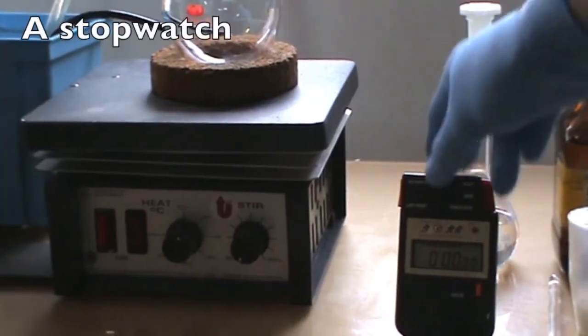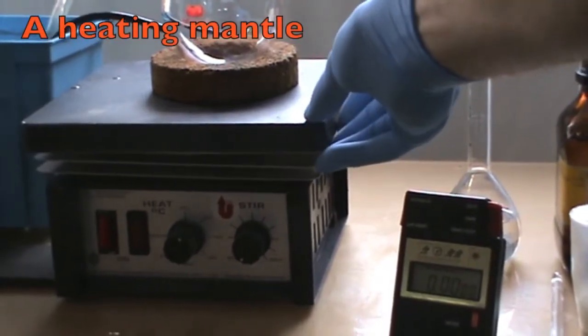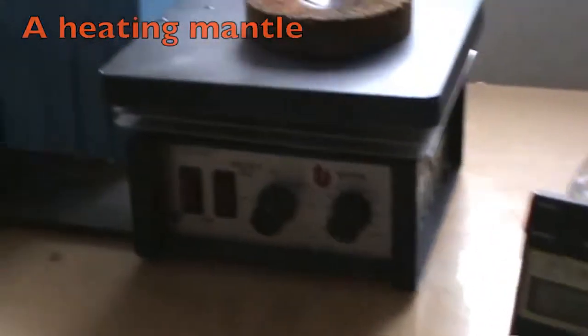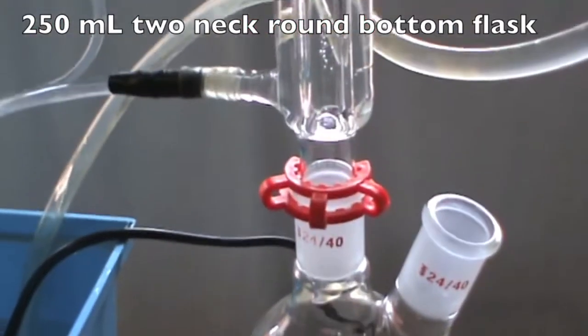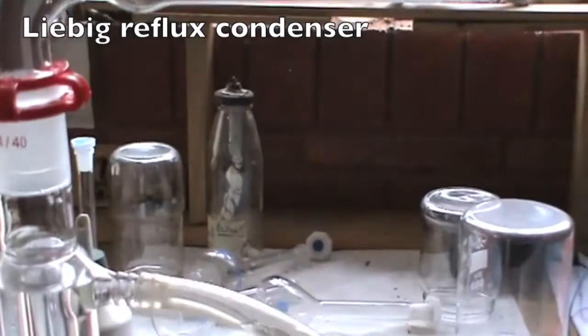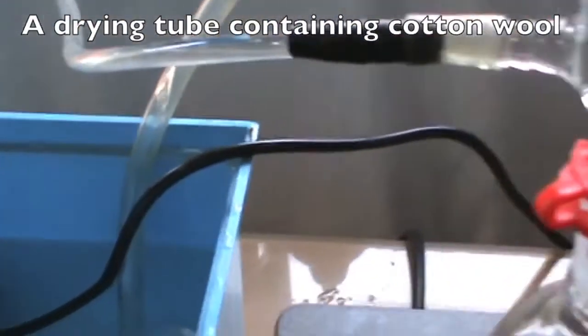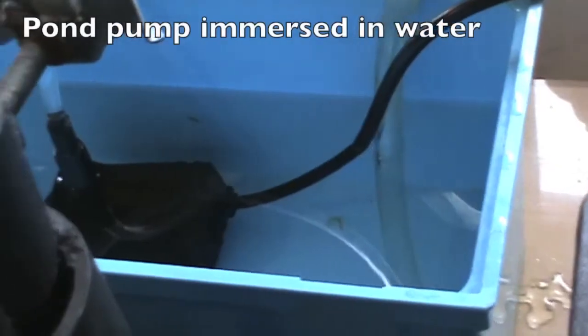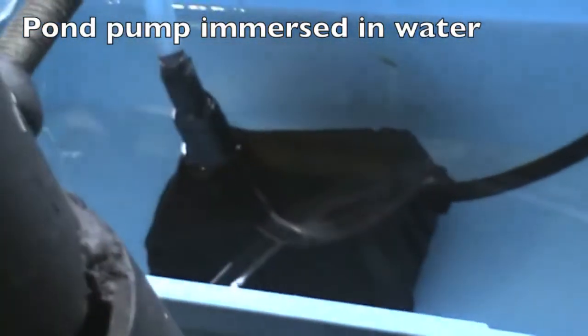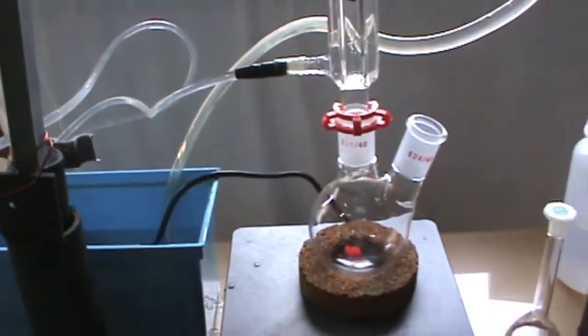A stopwatch, a heating mantle, a 250 ml two-neck round bottom flask that is connected to a Liebig reflux condenser fitted with a drying tube that contains cotton wool and a store-bought pond pump that is immersed into cold water that is fitted onto the reflux condenser.